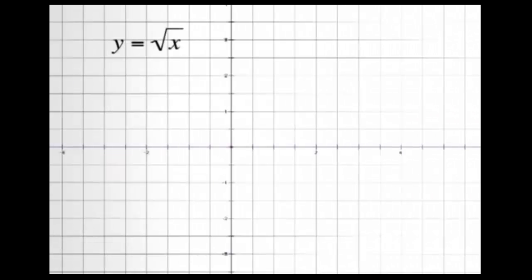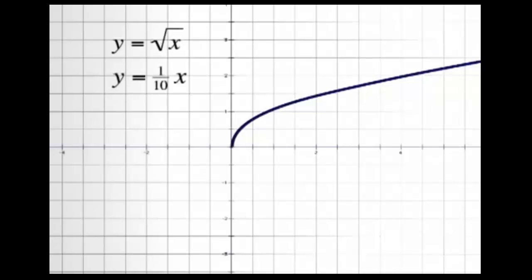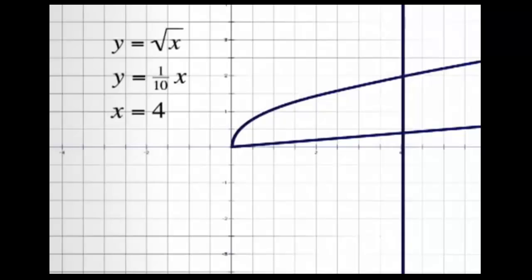Here is an example of a problem with two functions. First we draw the square root of x, and then next we draw y equals one-tenth x, the line with slope of one-tenth. We're going to cut this off at x equals four, draw a line down at x equals four, and shade the region between the two functions up to x equals four.